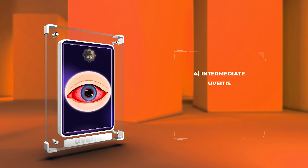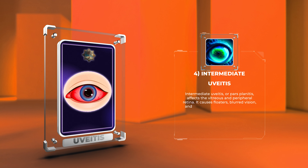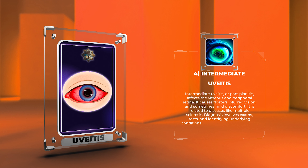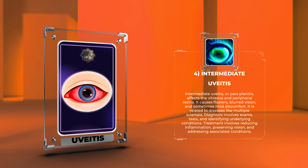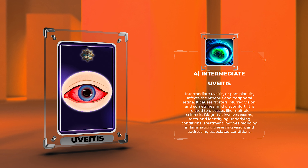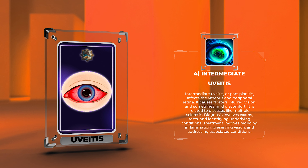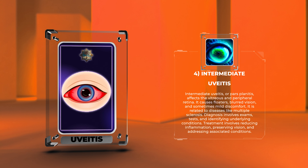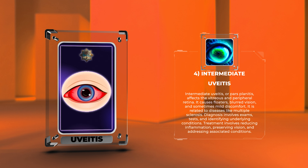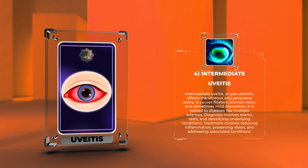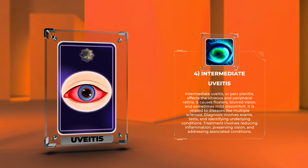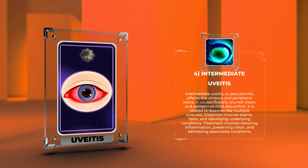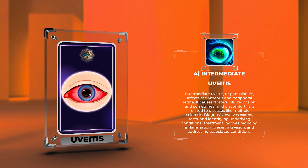Intermediate uveitis, or pars planitis, affects the vitreous and peripheral retina. It causes floaters, blurred vision, and sometimes mild discomfort. It is related to diseases like multiple sclerosis. Diagnosis involves exams, tests, and identifying underlying conditions.